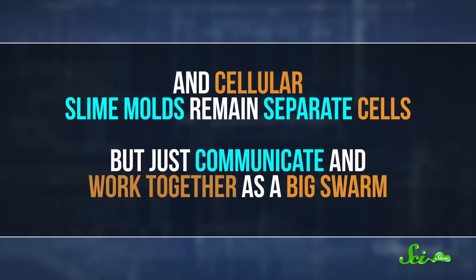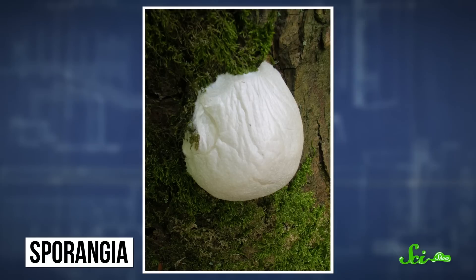And cellular slime molds remain separate cells, but just communicate and work together as a big swarm. These blobs cruise around in search of things to eat, like microbes. And when the environment is safe enough, slime molds grow tiny mushroom-like sporangia, pumping out spores that grow into the next generation of single cells.